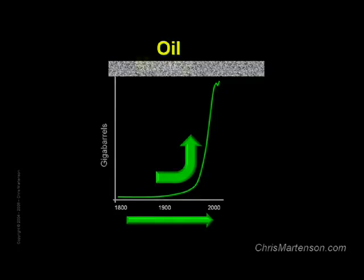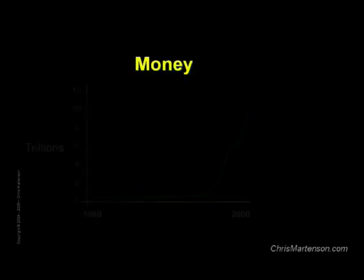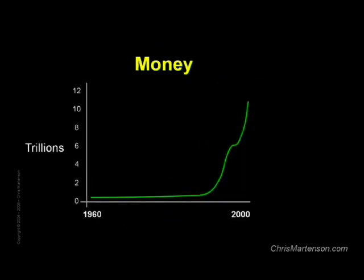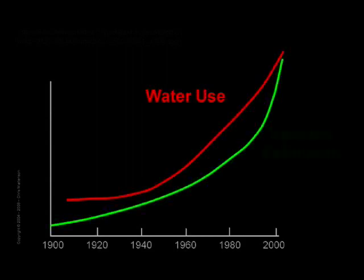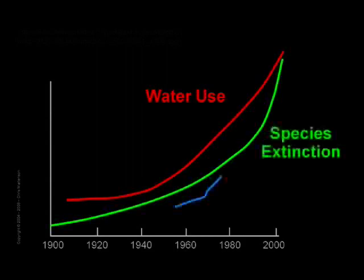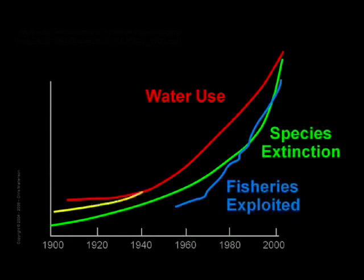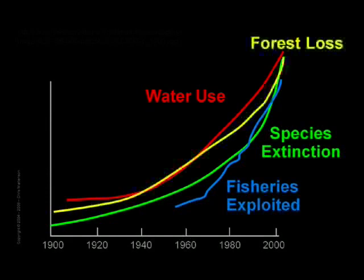And here's the US money supply, which has been compounding at incredible rates ranging between 5 and 18% per year, so this chart only needs to be a few decades long to see this hockey stick effect. And here's worldwide water use, species extinction, fisheries exploited, and forest cover lost. Each one of these is a finite resource, as are many other critical resources, and quite a few are approaching their limits.